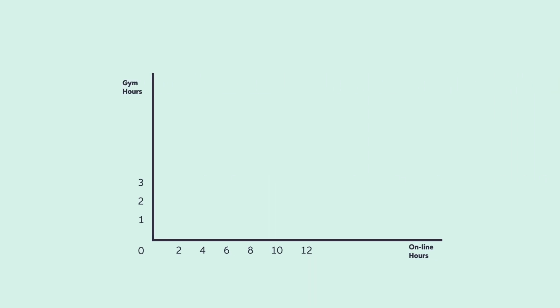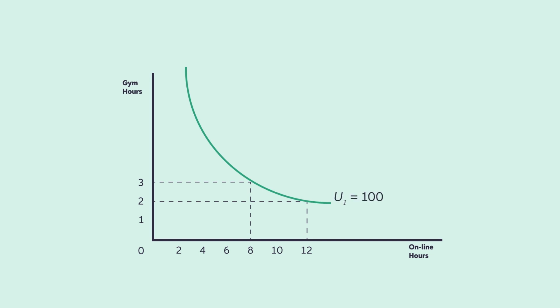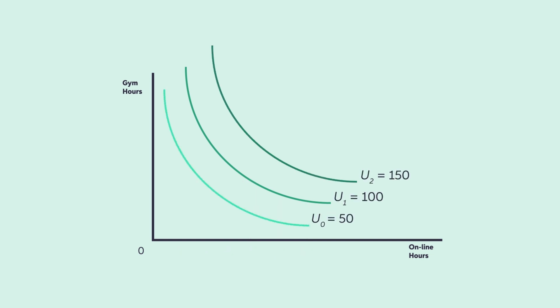Hi, I'm Mr. Beat. I'm one of the subject matter experts here at Chegg. In this video, we'll introduce the concept of consumer utility. We'll use the indifference curve to show how different combinations of goods can produce the same utility. Then we'll use an indifference map to reveal how increasing the combinations of goods can create pathways for achieving higher levels of utility.